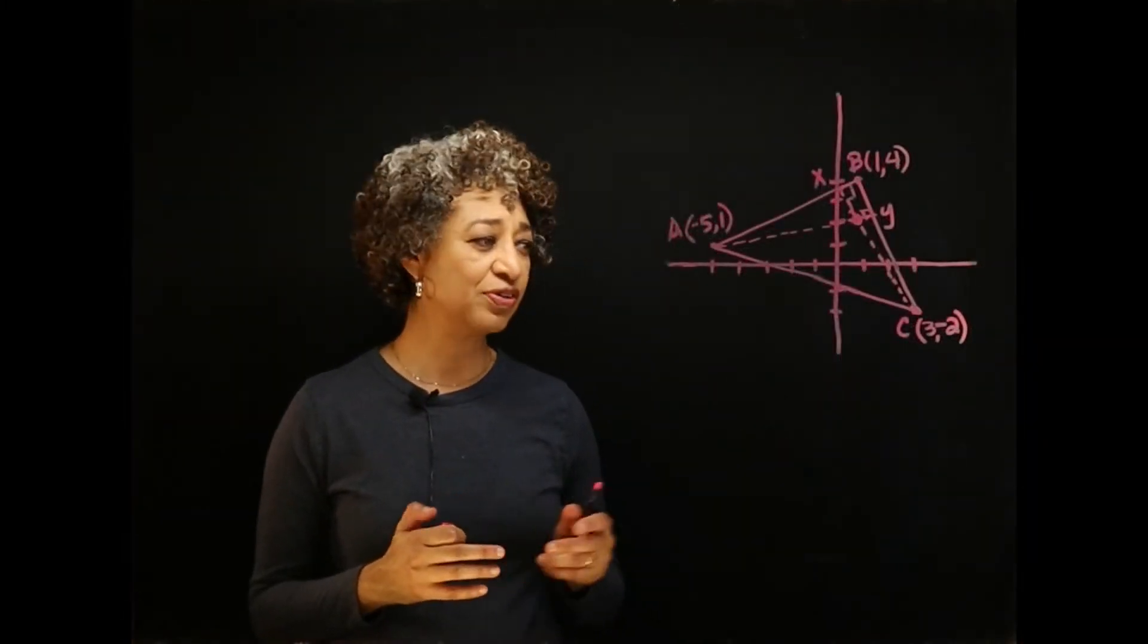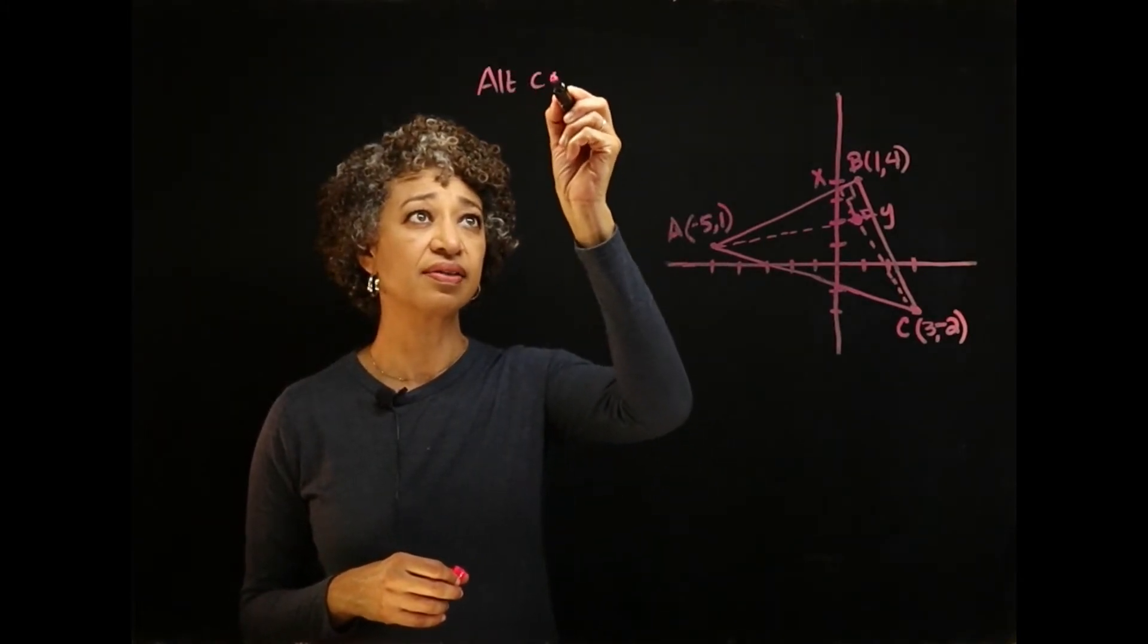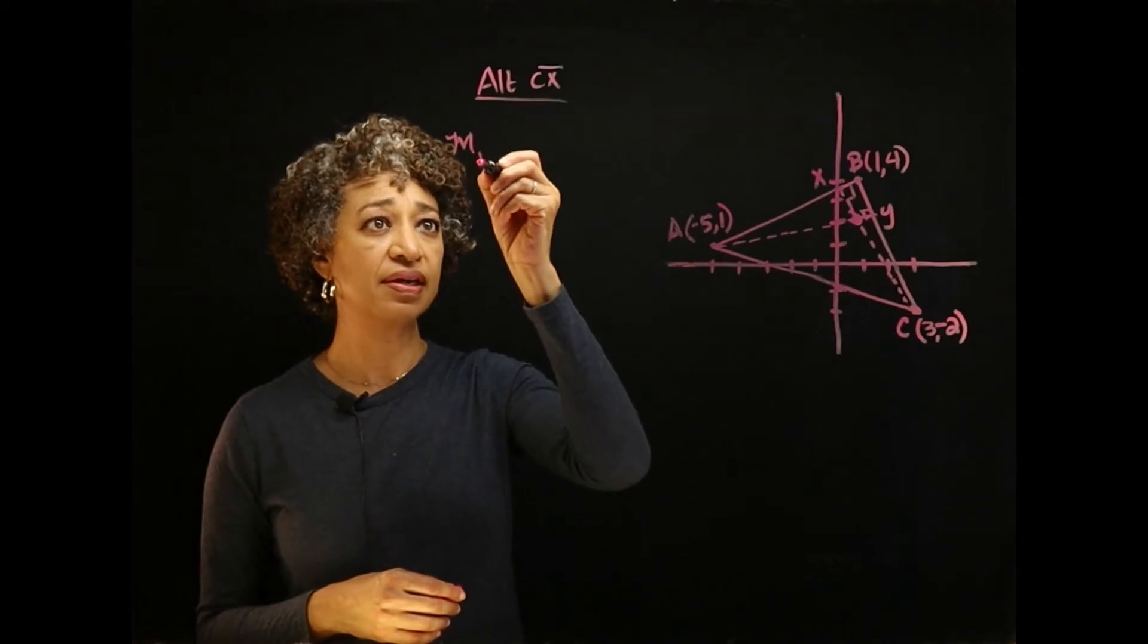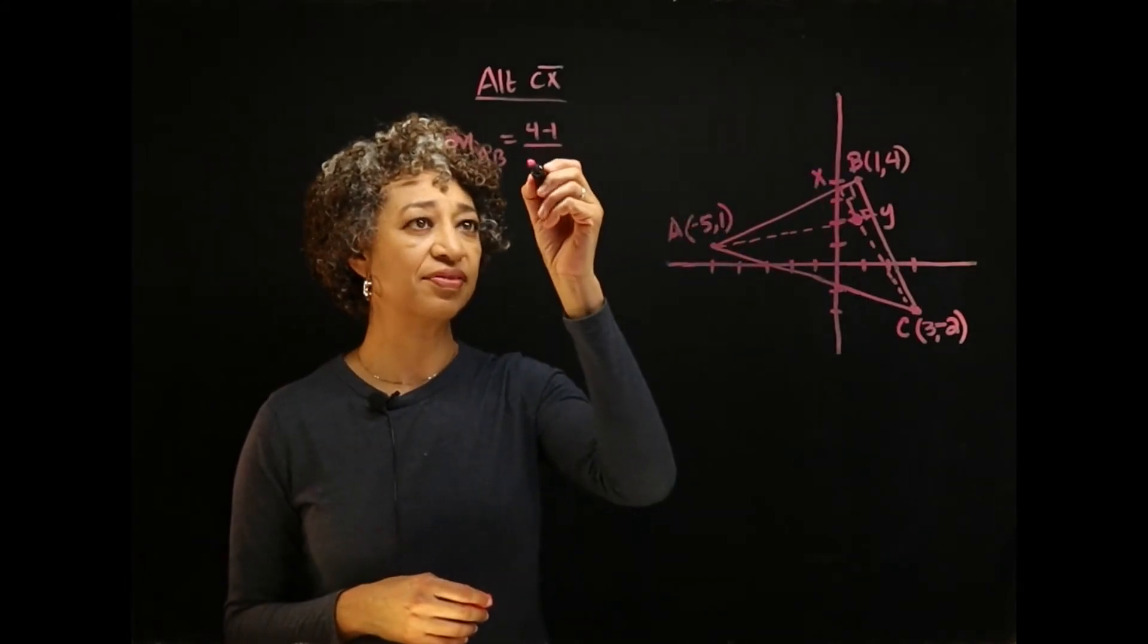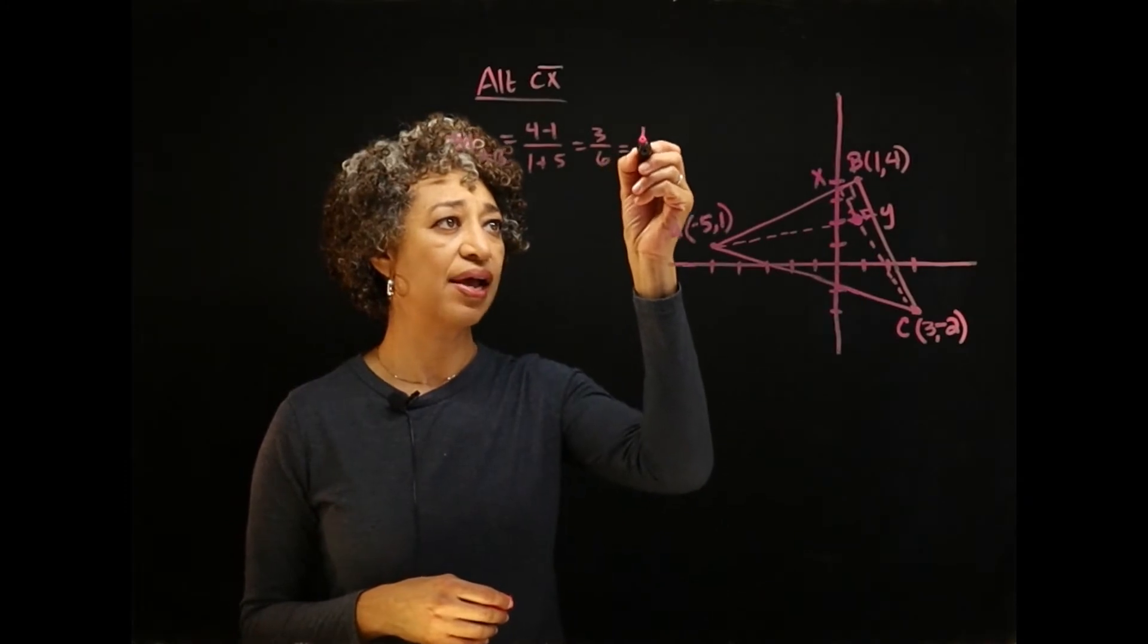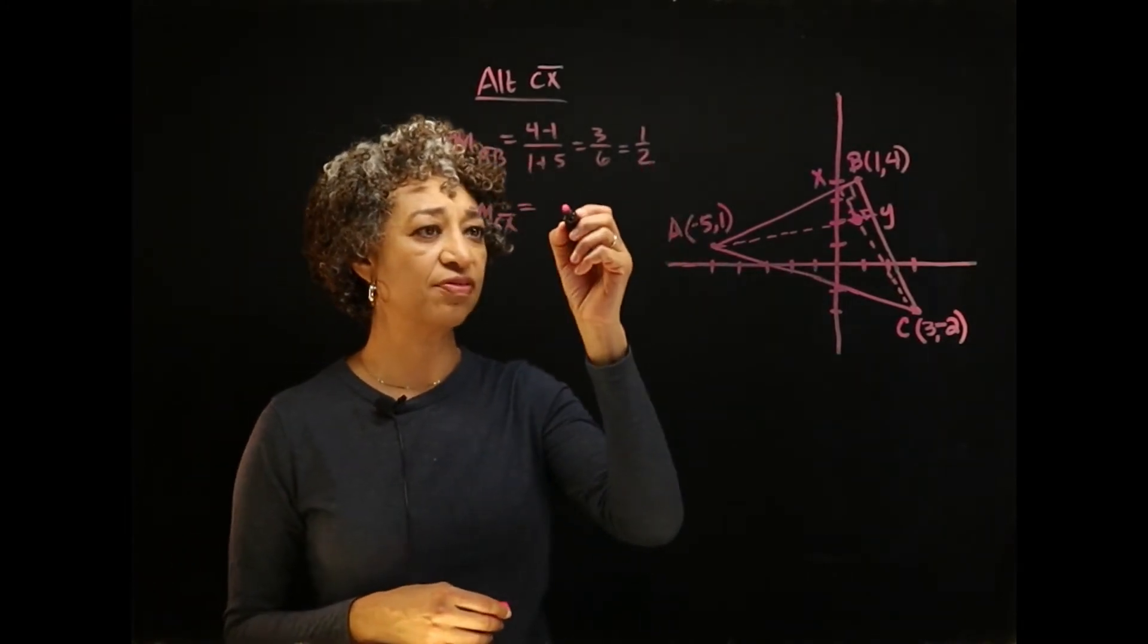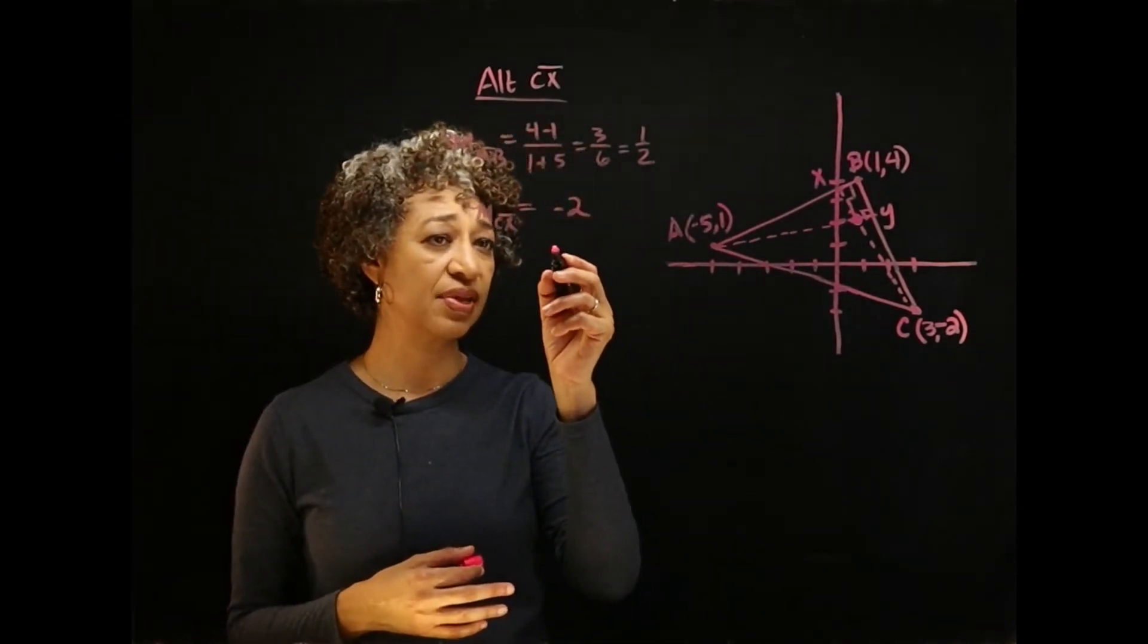Let's find the slope of our first altitude, altitude CX. In order to do that, I want to find the slope of AB. The slope of AB is equal to 4 minus 1 over 1 minus negative 5, which is 3 over 6 or 1 half. So then the slope of my altitude is the opposite reciprocal. I flip over 1 half and take the opposite of it and I get the slope as negative 2.